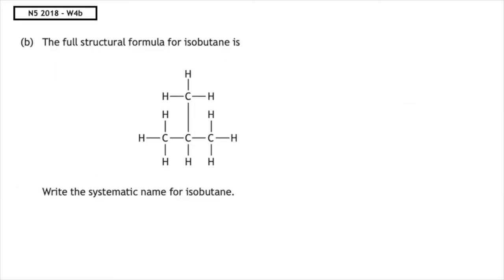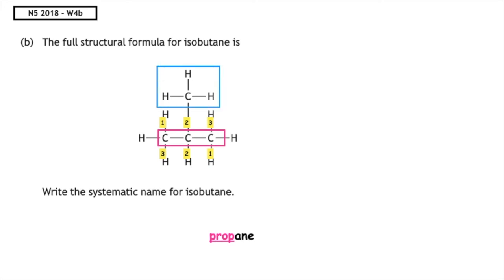This past paper question is from the National 5 2018 written, question 4b. The full structural formula of isobutane is given. Write the systematic name for isobutane. We identify the longest carbon chain, which has three carbons and is saturated, so the name is propane. We number the top and bottom lines of carbons and put a box around the branch not in the longest chain. The lowest number the branch can be found on is position 2, so this is known as 2-methylpropane.